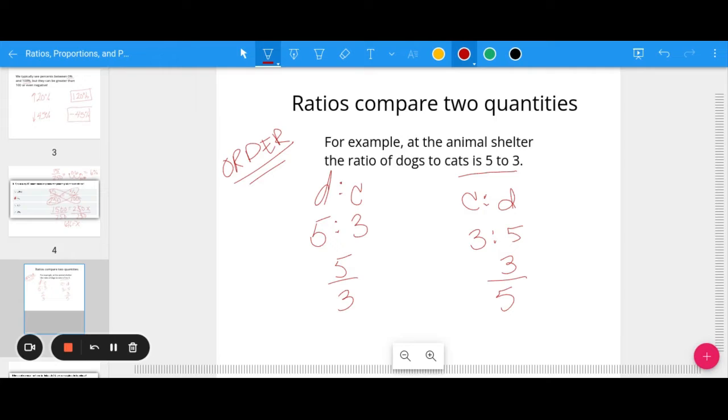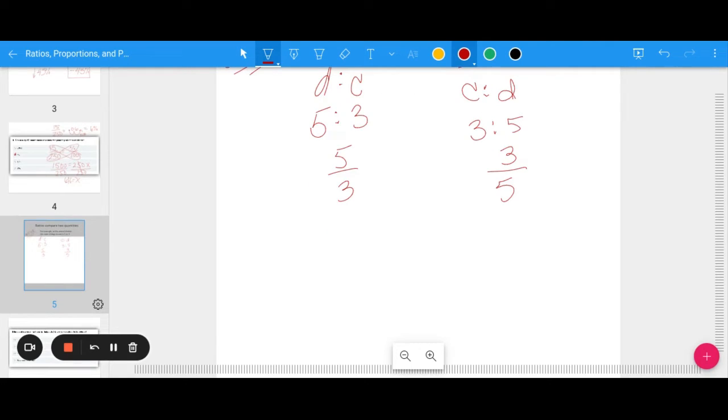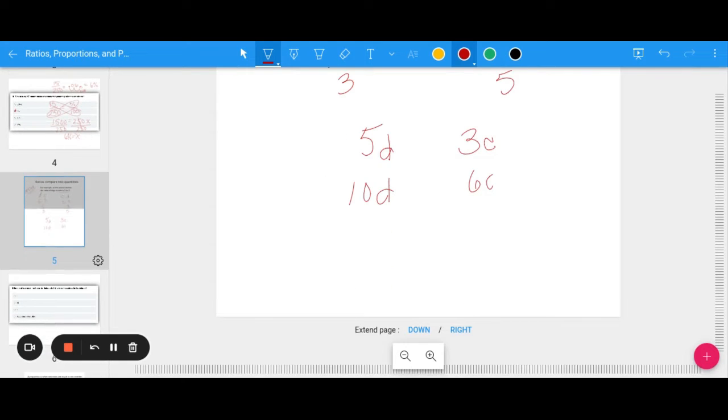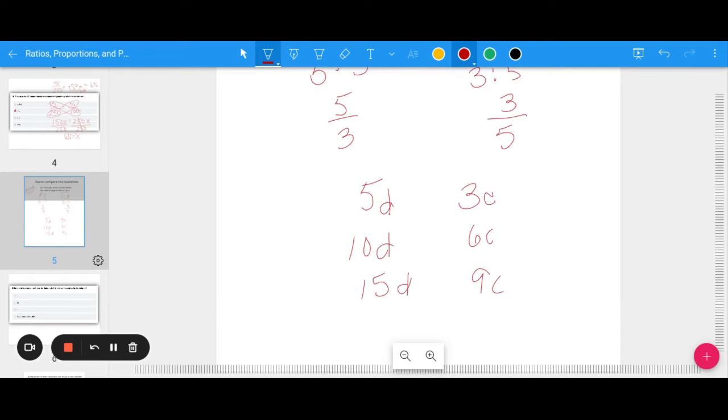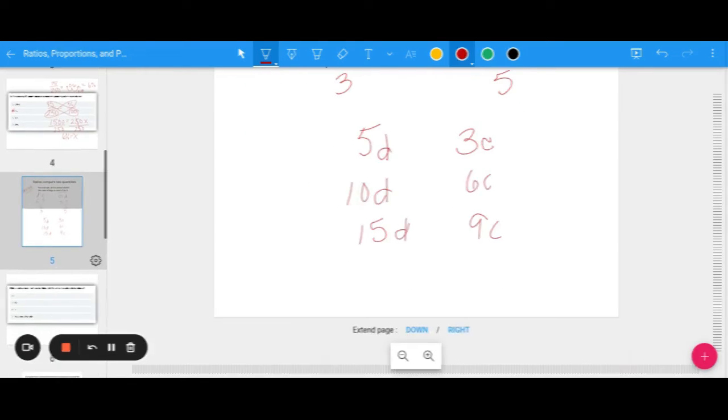What would happen if I asked you how many cats and dogs are at the animal shelter? If we're only given the ratio, there's not enough information to solve this. There could be 5 dogs and 3 cats, but there could be 10 dogs and 6 cats. There could be 15 dogs and 9 cats. That's all the same ratio. Just because we're given a ratio does not mean we can find the total number of whatever we're talking about.